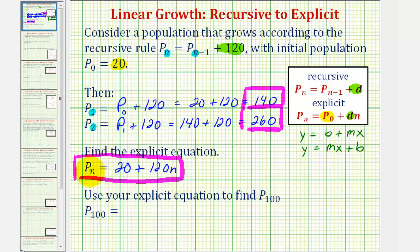Notice how the variable here on the left must match the variable here on the right. Now we want to use the explicit equation to find P₁₀₀. So we'll substitute n equals 100 into our explicit equation. So P₁₀₀ is equal to 20 plus 120 times 100 which is 20 plus 12,000. So P₁₀₀ is equal to 12,020.